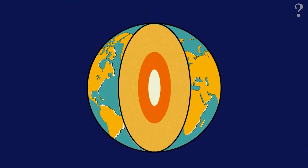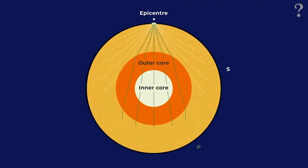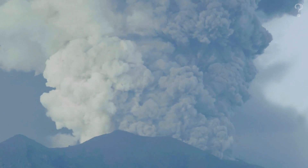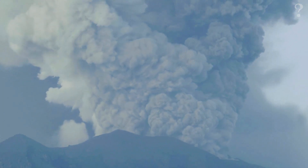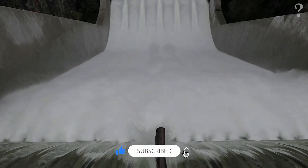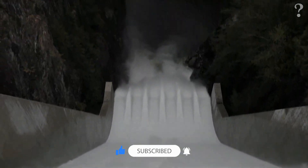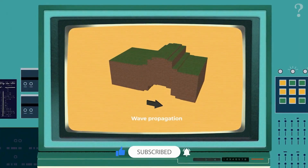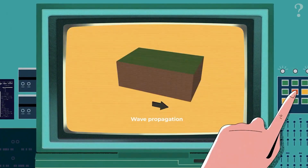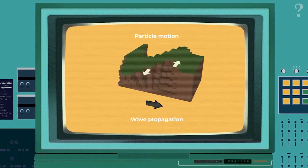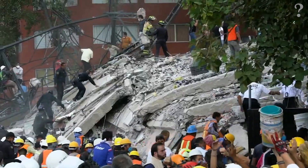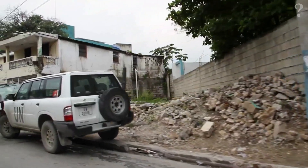Tectonic earthquakes occur when two tectonic plates move against each other, causing energy to be released and leading to the movement of the ground. Volcanic earthquakes occur when magma rises to the Earth's surface and causes a disturbance in the ground. Human-induced earthquakes are caused by activities such as fracking, underground nuclear explosions, and the filling of large reservoirs. Understanding earthquakes helps us predict future events and plan for effective disaster response and recovery efforts, reducing their impact on communities.